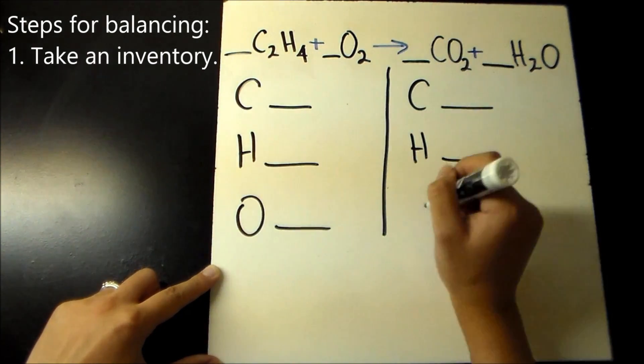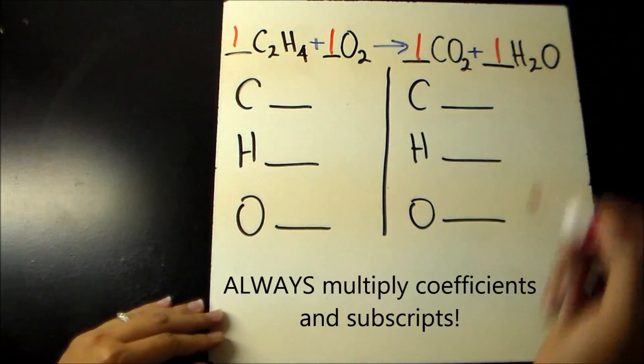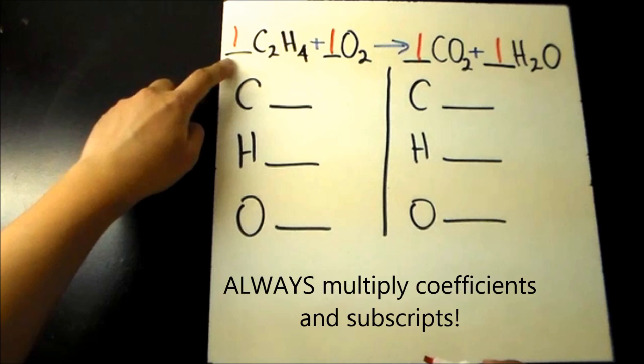The first step is to take an inventory of all the elements on either side. Now a coefficient of 1 is never written, but it is always implied. Remember, always multiply coefficients and subscripts.